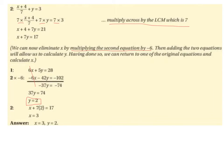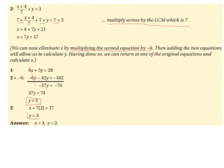Now we need to find x by substituting y back into one of the equations. Using x plus 7y equals 17: substituting y equals 2 gives x plus 7 multiplied by 2 equals 17. 7 times 2 is 14, and 17 minus 14 is 3, so x equals 3.